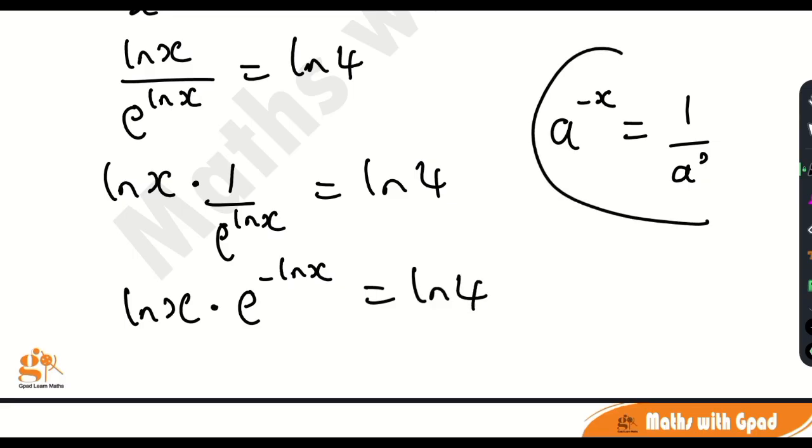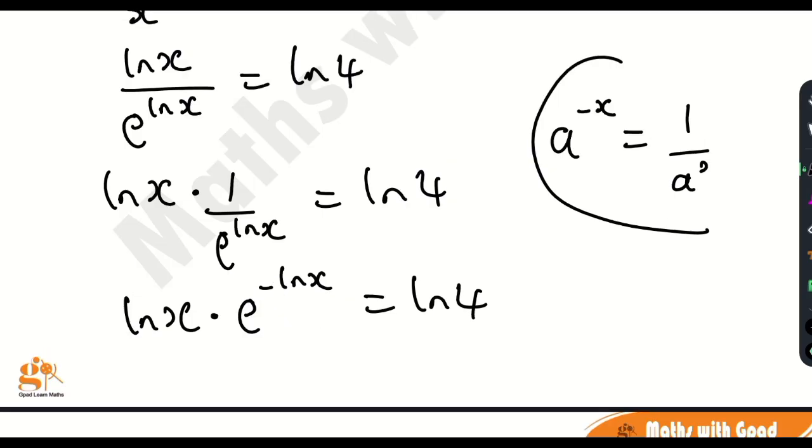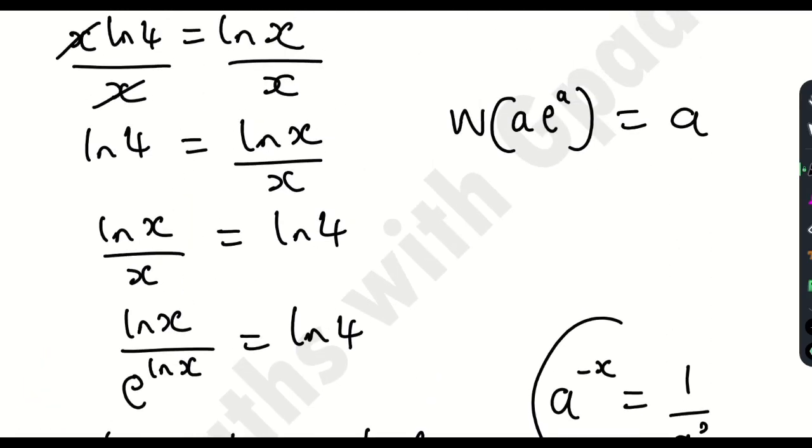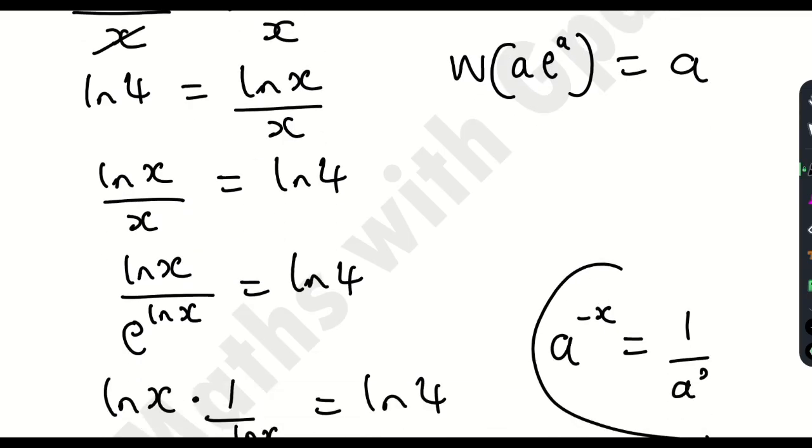Can you see now that we are almost getting that Lambert W function that has e in it? But we are almost close. We have a negative sign here. And from the Lambert W function, let me take you back there. See, a is here and a is here. So you must have identical values as the coefficient of e and as the exponent of e.